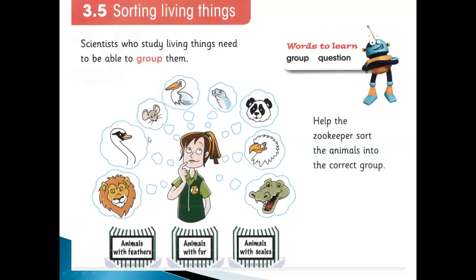These three animals have feathers — these three are animals with feathers. Animals with fur, like lions, mouse, and panda. Animals with scales, like crocodile and snake. So like this, they are making groups. You can also make these groups in your notebook — animals with feathers, animals with fur, animals with scales — and write down the names.